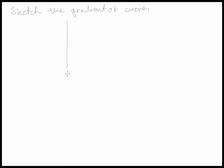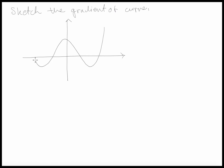So let's say we have a curve that looks kind of like this. We call this x1, call that x2, and we call this point x3. That's obviously x and that's y. So what we're trying to do is we're trying to find the gradient function of this.